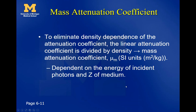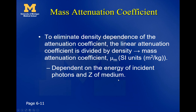Shifting to the mass attenuation coefficient: the density of the material matters, and density varies for different body tissues inside our patients. For example, the lungs contain a mixture of air, which is barely attenuating, and the tissue and blood that make up lung structure. To eliminate the confounding effect of density, we use the mass attenuation coefficient, which has SI units of meters squared per kilogram. It depends on incident photon energy and the atomic number Z of the medium — we factor out density and multiply it back in during radiation calculations.